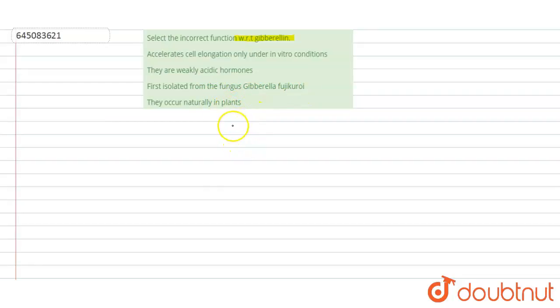So if you'll see, gibberellin or gibberellic acid, these are important plant growth regulators which play an important role in growth of the plants and are involved in various metabolic processes. These help in stem elongation.